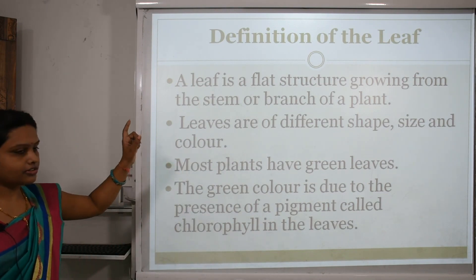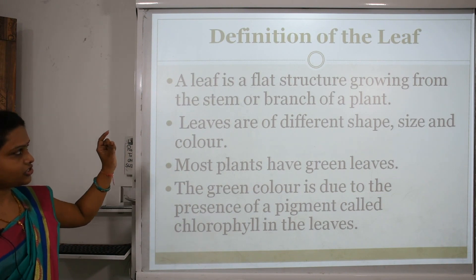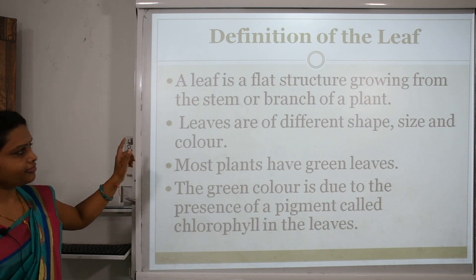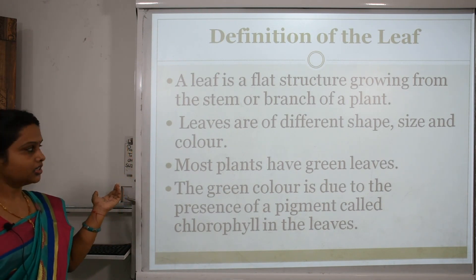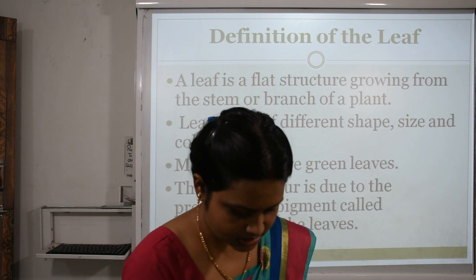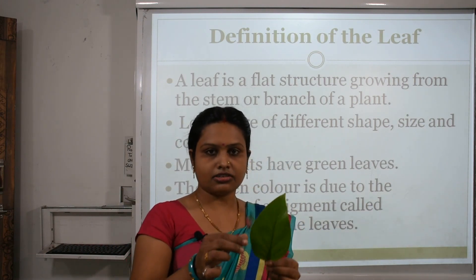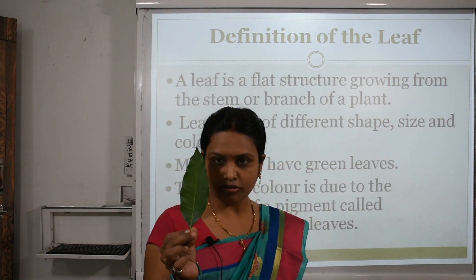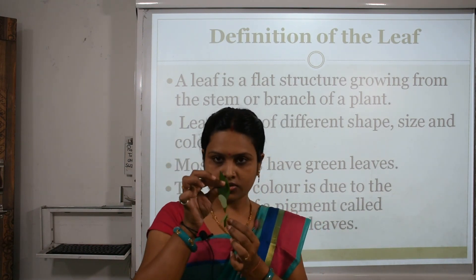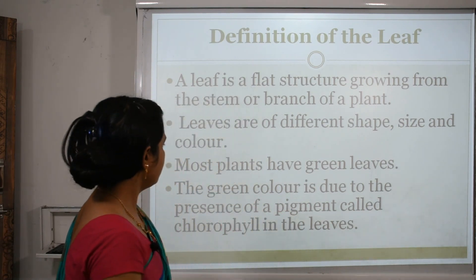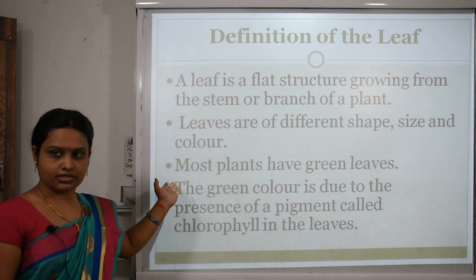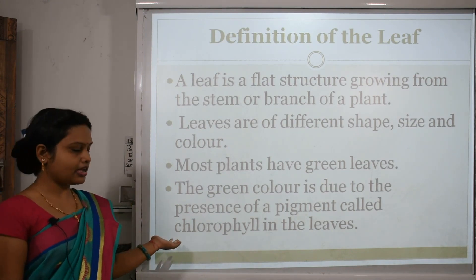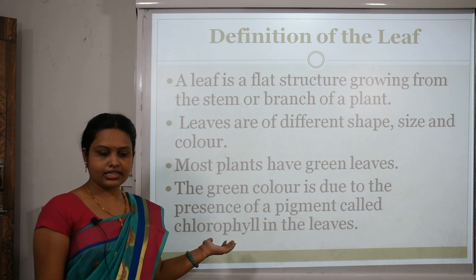Now, the definition of a leaf. A leaf is a flat structure growing from the stem or branch of a plant. Leaves come in different shapes, sizes, and colors. See children, this is a money plant leaf, this is a mango leaf, and this is a rose leaf. Most plants have green leaves.